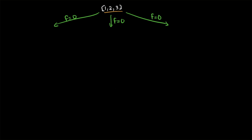The first branch has s equals zero, so we swap indices f and s which are both zero — no change — giving us one two three. The second child has s equals one, swapping indices zero and one, giving us two one three. The third child has s equals two, swapping indices zero and two, giving us three two one.